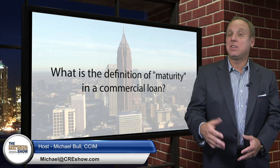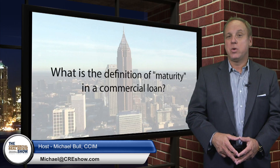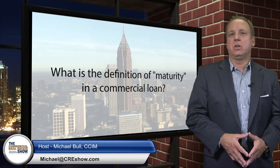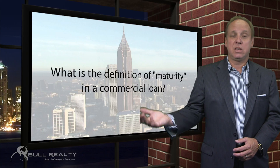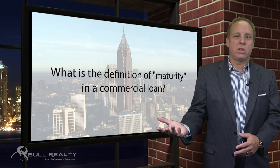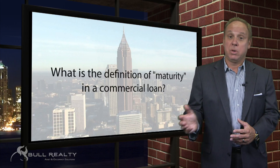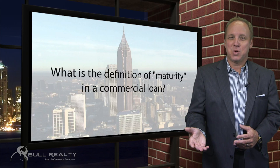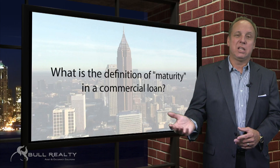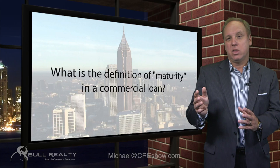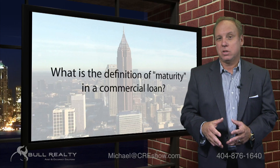Our question today is: Michael, what is the definition of maturity in a commercial loan? Well, it's when the loan is due. If it's a 30-year loan that's fully amortizing, it matures at the end of 30 years. Or it may be a 25-year amortization — how the payments are scheduled over 25 years — but there's a call, a balloon, or a due date of five years from the date the loan was done. So you have a maturity at five years, and then the remaining balance principal is due, and any unpaid interest.